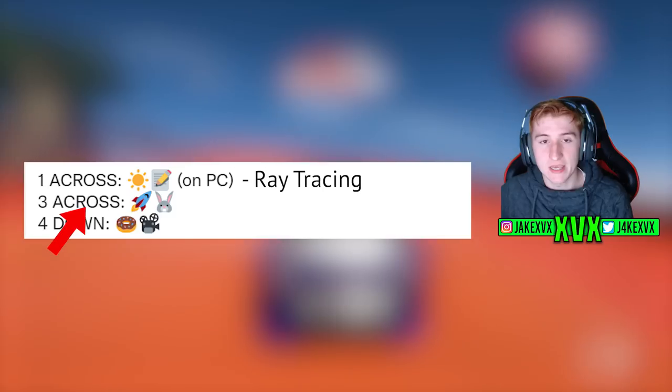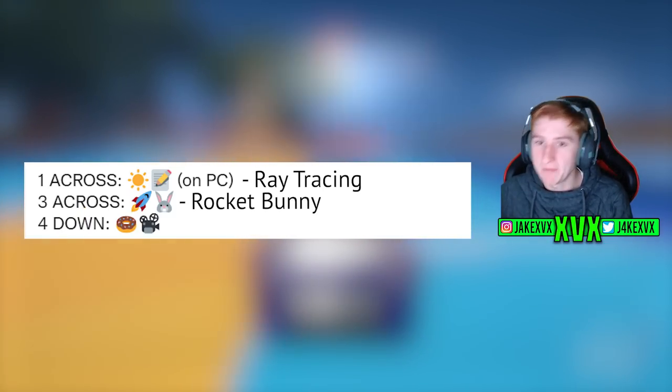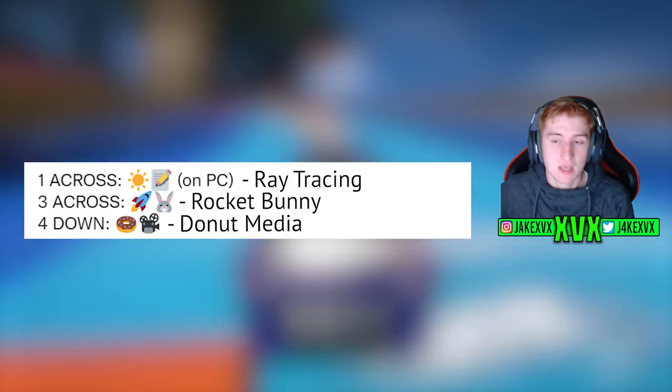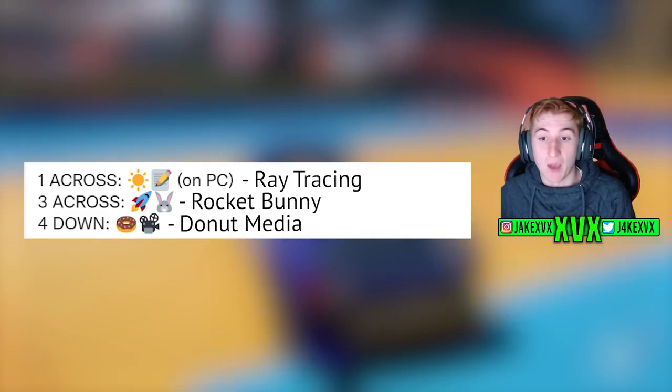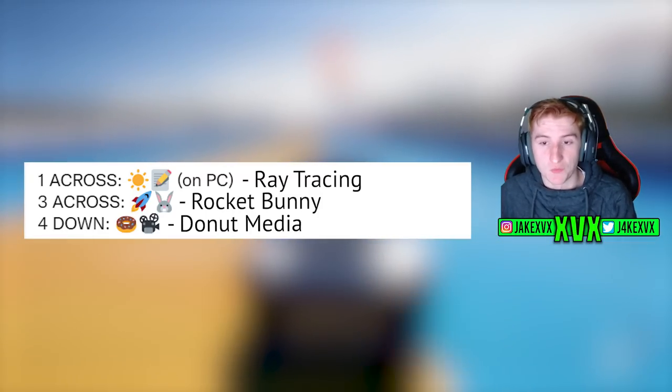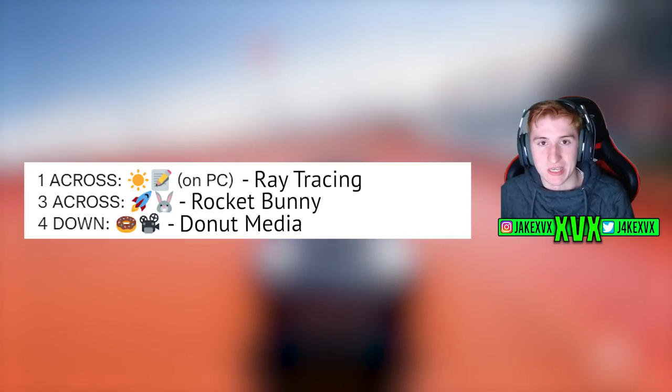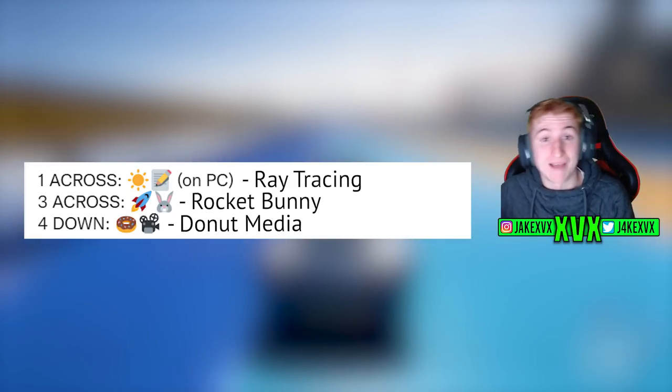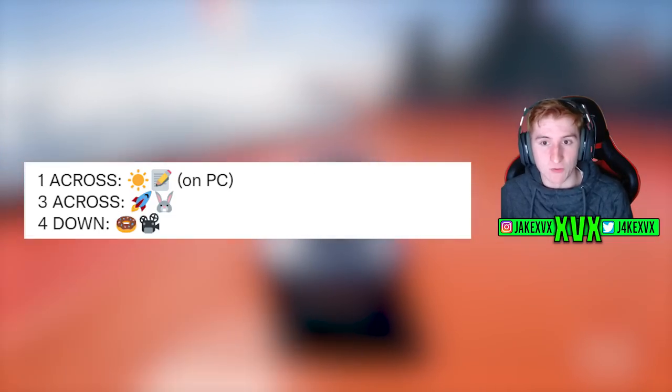This one here, three across, it looks like a rocket and then a bunny. Rocket bunny. And then four down, we have a donut and a camera. Donut media. So this sort of confirms the basis of the update. It's going to be donut media and we are getting rocket bunny returning the rocket bunny body kits and the top one, some kind of ray tracing feature on PC as well. Maybe we're going to be able to drive around with ray tracing on PC in Horizon 5, which will be very cool.